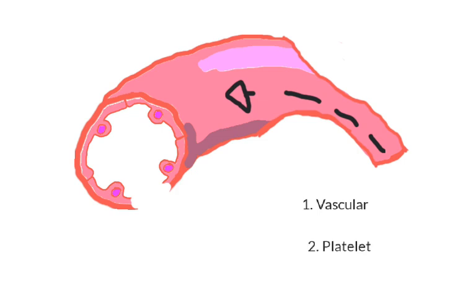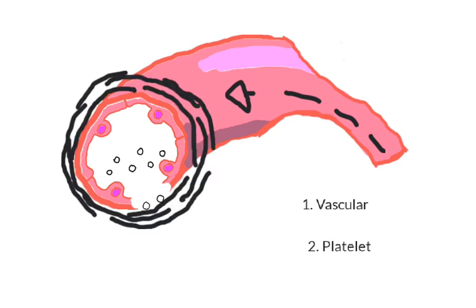The second phase is the platelet phase. Platelets will stick to newly exposed collagen fibers. This will cause the platelets to become sticky, allowing them to stick to more platelets, which then become sticky, and ultimately, this forms a platelet plug.